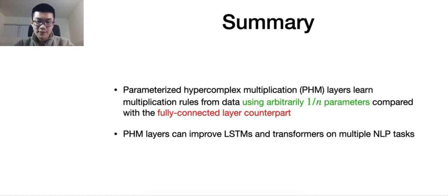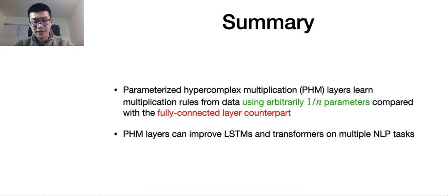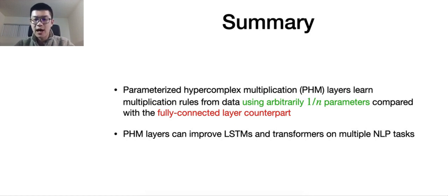In summary, we propose the Parameterized Hyper-complex Multiplication (PHM) layers, which learn multiplication rules from data using arbitrarily 1-over-n learnable parameters compared with FC layer counterparts. Experiments show PHM layers improve both LSTMs and Transformers on multiple NLP tasks including natural language inference, neural machine translation, text style transfer, and subject-verb agreement.